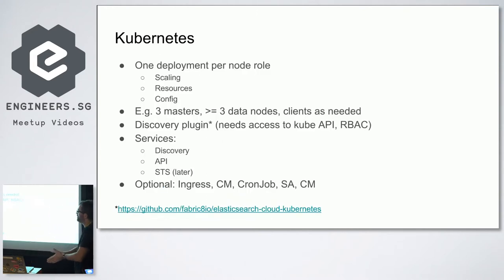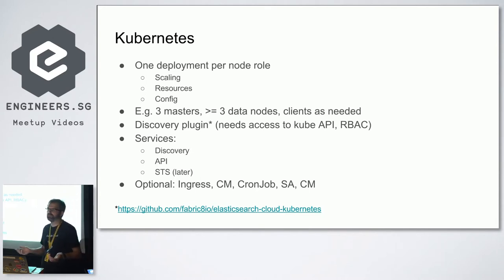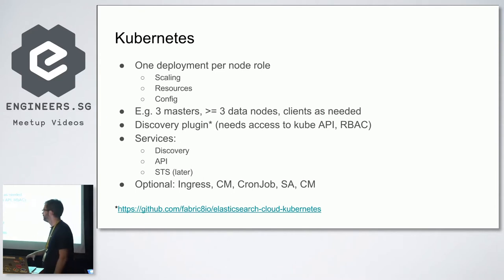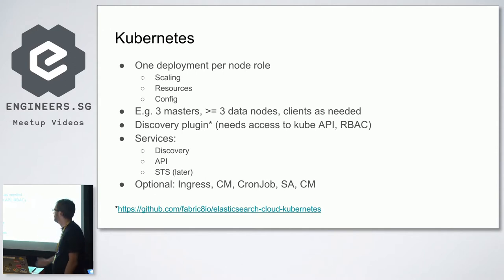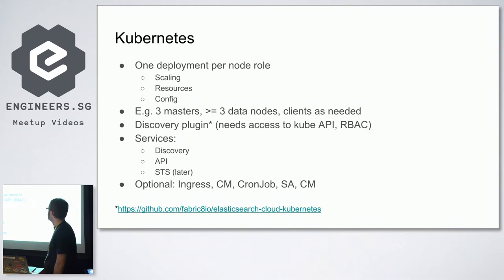Why one deployment per node role? Basically, scaling. You want to be able to scale them independently. For masters, there's no point having more than three because only one can be active at a time, and you need an odd number for elections. You cannot have only one master because if it's down there's no master. For data nodes, you want at least three to properly distribute shards. For clients, start at three and scale up as needed.